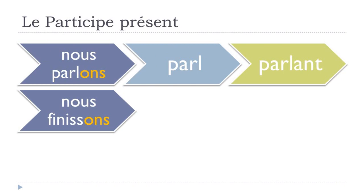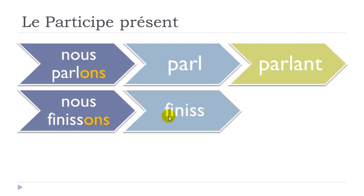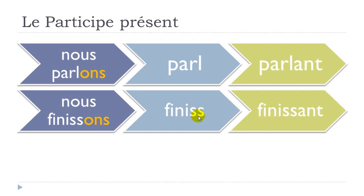For the second group: finir — nous finissons, remove -ONS to get 'finiss', add -ANT to get 'finissant'. For the third group: prendre — nous prenons, remove -ONS to get 'pren', add -ANT to get 'prenant'. The rule is the same across all groups.